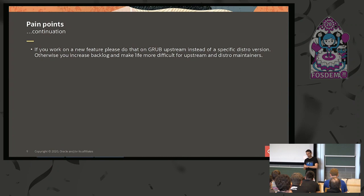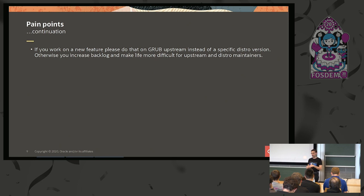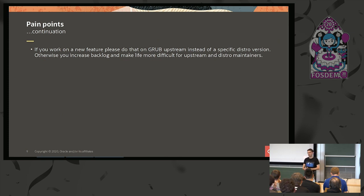Recently I found out that some people start working on new features, but not on the Grub upstream — they start on a specific Grub version in a distro. This is problematic, especially if the distro carries many patches which are not forward-ported to upstream. So I would like to encourage you: if you want to provide a new feature, start your work on Grub upstream. If you need features from a specific distro for your work, please forward-port those features to Grub upstream first, and then start. I think it will make life easier for the upstream maintainer.